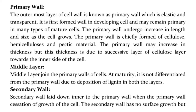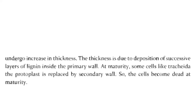The secondary wall is laid down inner to the primary wall when the primary wall ceases growth of the cell. The secondary wall has no surface growth but undergoes increase in thickness. This thickness is due to deposition of successive layers of lignin inside the primary wall. At maturity, in some cells like tracheae, the protoplast is replaced by the secondary wall, so the cells become dead at maturity.